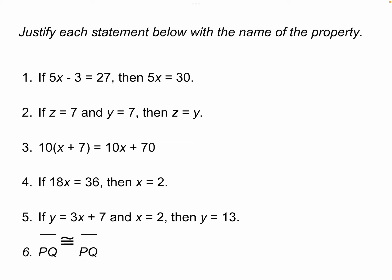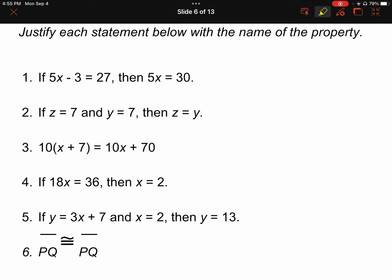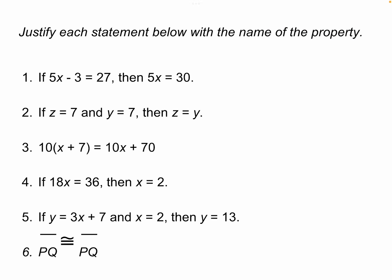Now in order to come up with these, let's think about the properties we're talking about. If we read number one: if 5x minus 3 equals 27, then 5x equals 30. Notice the 'if' and 'then' making this a conditional statement. Moving from the hypothesis to the conclusion, we added 3 to both sides. So the reason is the addition property of equality, because we added the same thing to both sides of the equal sign.